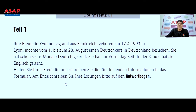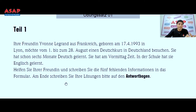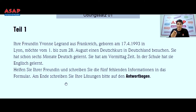She had time before noon — 'am Vormittag' means before noon. In school she studied English. Help your friend and put the five missing pieces of information in the form. Once you do this, you have to write down your answers in the answer sheet, which we'll discuss later.